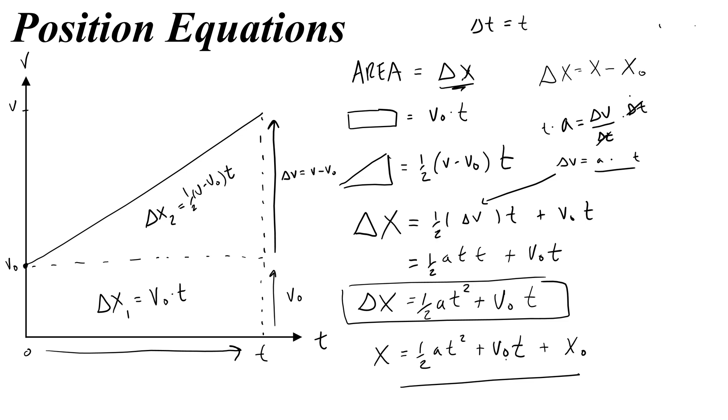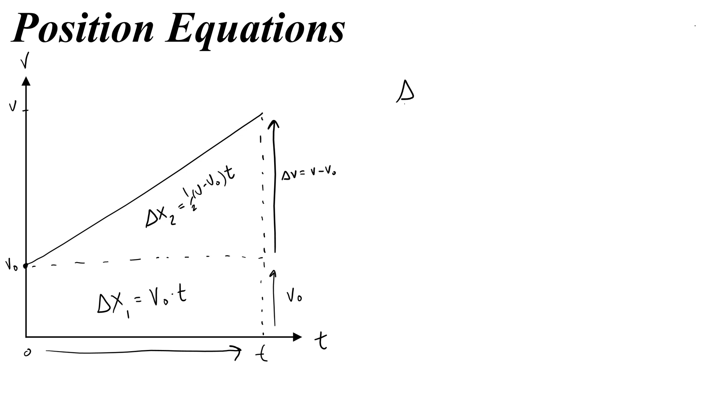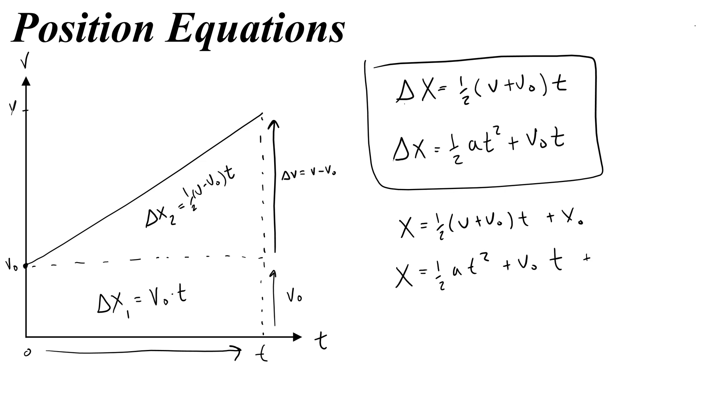So just give yourself some sort of review of these two equations. Just put in a box somewhere that the important equations you need to know from this are delta x equals one-half v plus v naught times t, and delta x equals one-half a t squared plus v naught t. Those are our super useful equations for finding displacement. And if you want to think of these as graphable equations, all you need to do is add x naught. So you would get x equals one-half v plus v naught t plus x naught, or x equals one-half a t squared plus v naught t plus x naught. These are graphable versions of the equations.